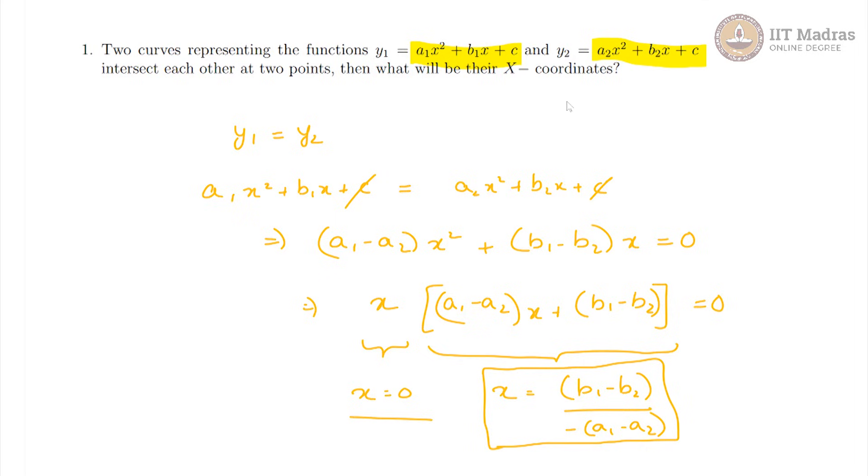Now, this is only a valid solution if a1 and a2 are not equal because the denominator cannot be 0. Therefore, a1 is not equal to a2 is a condition that needs to be satisfied. So, these are the two x coordinates, one is 0 and the other is b1 minus b2 by a2 minus a1.